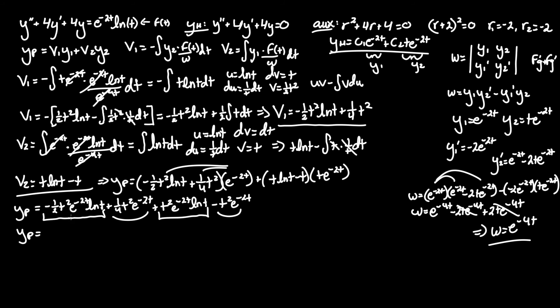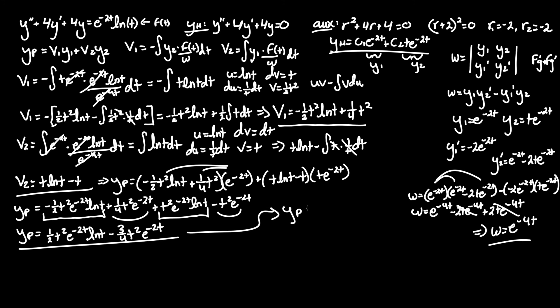Combining the ln(t) terms: t²e^(-2t)·ln(t) - ½t²e^(-2t)·ln(t) = ½t²e^(-2t)·ln(t). For the remaining terms: -t²e^(-2t) + ¼t²e^(-2t) = -¾t²e^(-2t). So y_p = ½t²e^(-2t)·ln(t) - ¾t²e^(-2t). Factoring out t²e^(-2t), this can be written as t²e^(-2t)·(2·ln(t) - 3)/4.